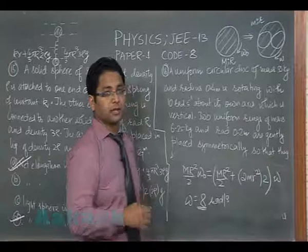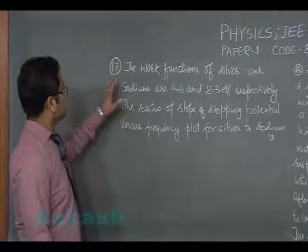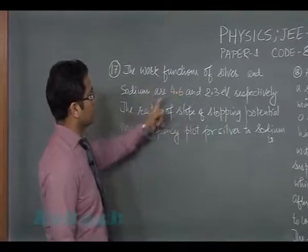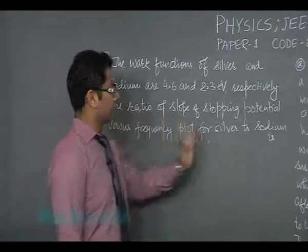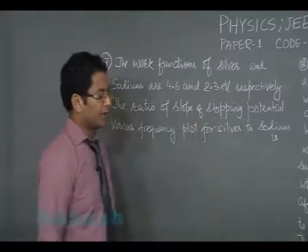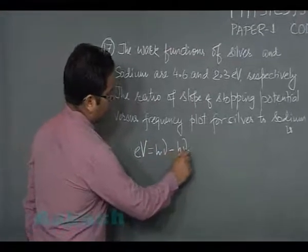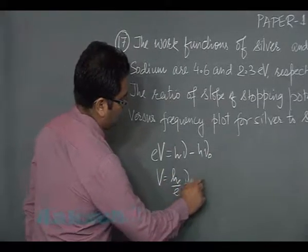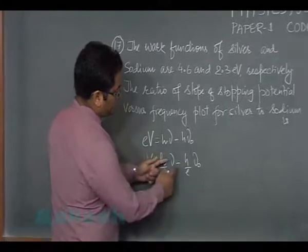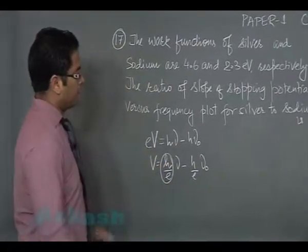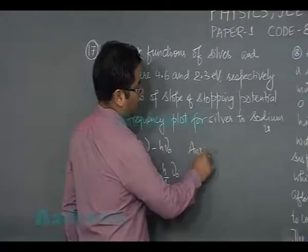We'll continue with question number 17. The work function of silver and sodium are 4.6 and 2.3 electron volts respectively. The ratio of slope of stopping potential versus frequency for silver to sodium. Stopping potential V is hν minus hν₀, so stopping potential is going to be (h/e)ν minus (h/e)ν₀. We've got to plot the graph of V versus ν. This is the slope, and you could see the slope is independent of nature of material because it's h/e. Therefore the answer, the ratio has to be 1.